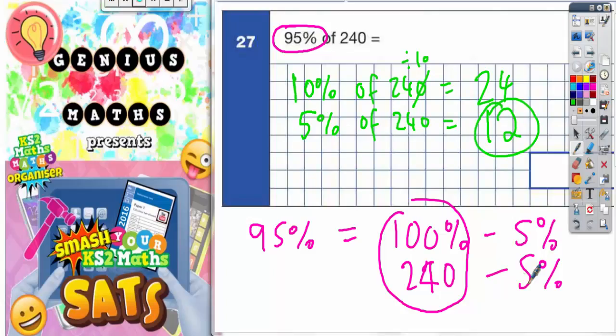So this 5% is worth 12. All we need to do now to get our final answer is 240 take away 12. So 240 take away 12, let's have a look. Zero take away 2, we can't do, so borrow.